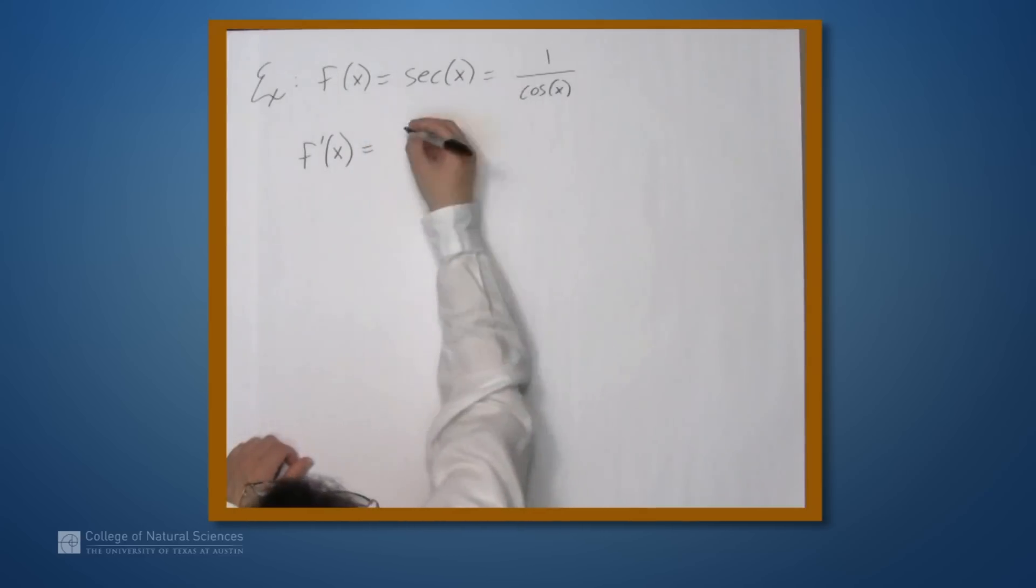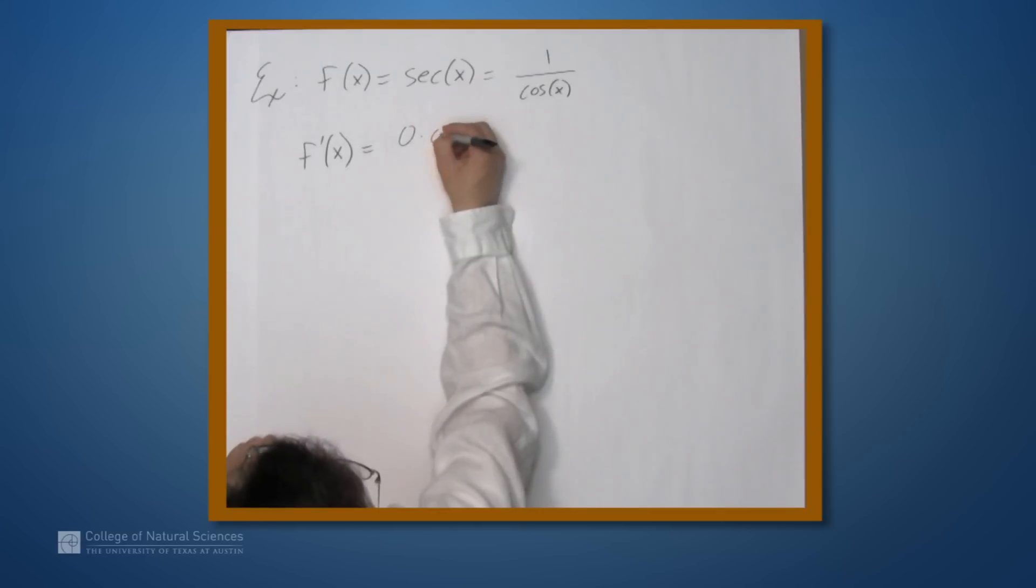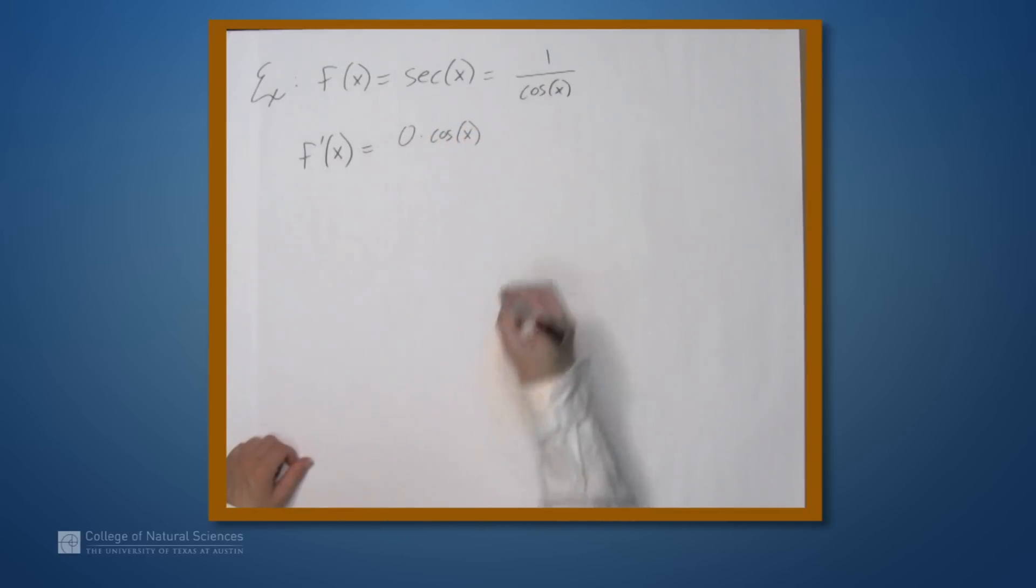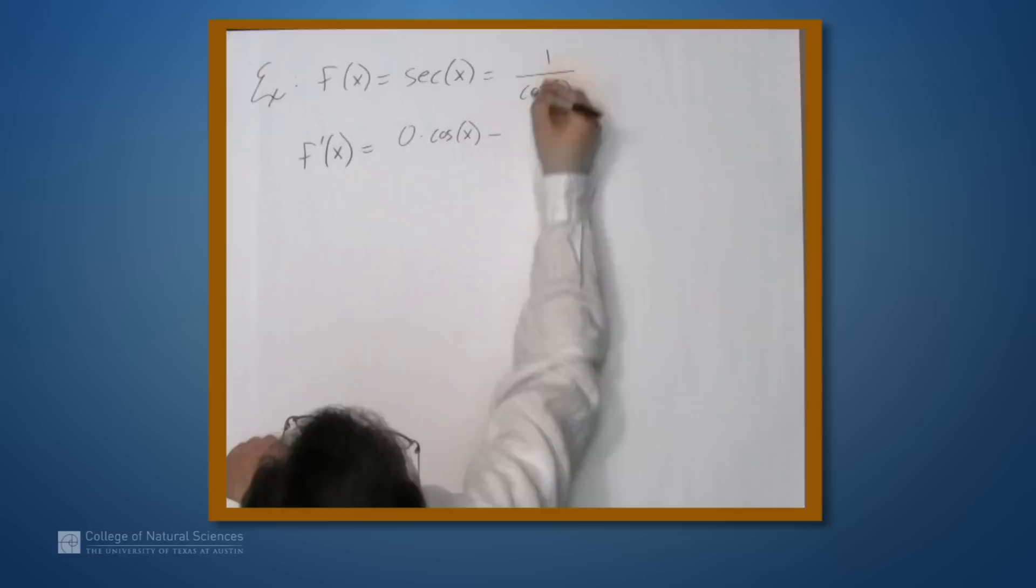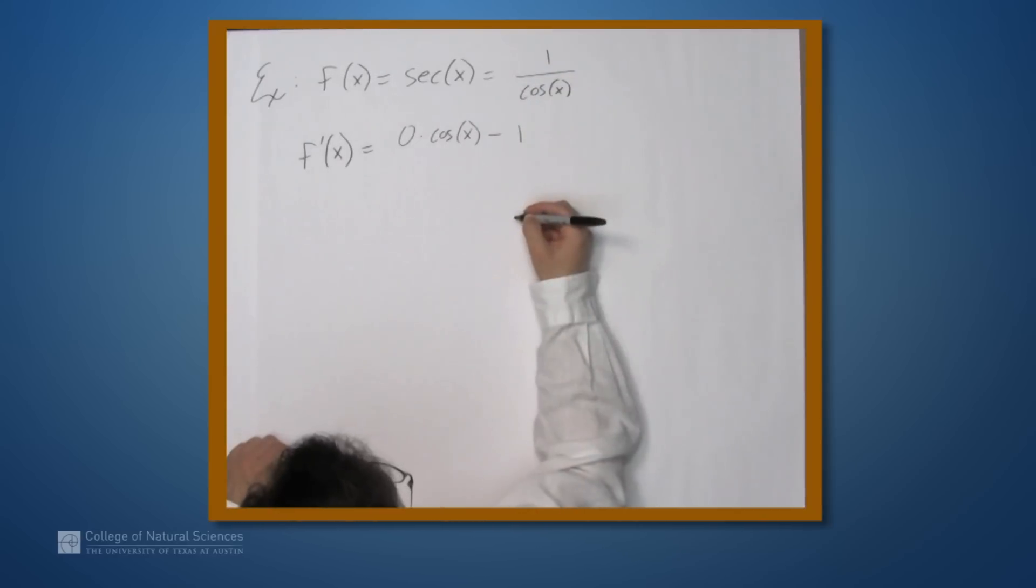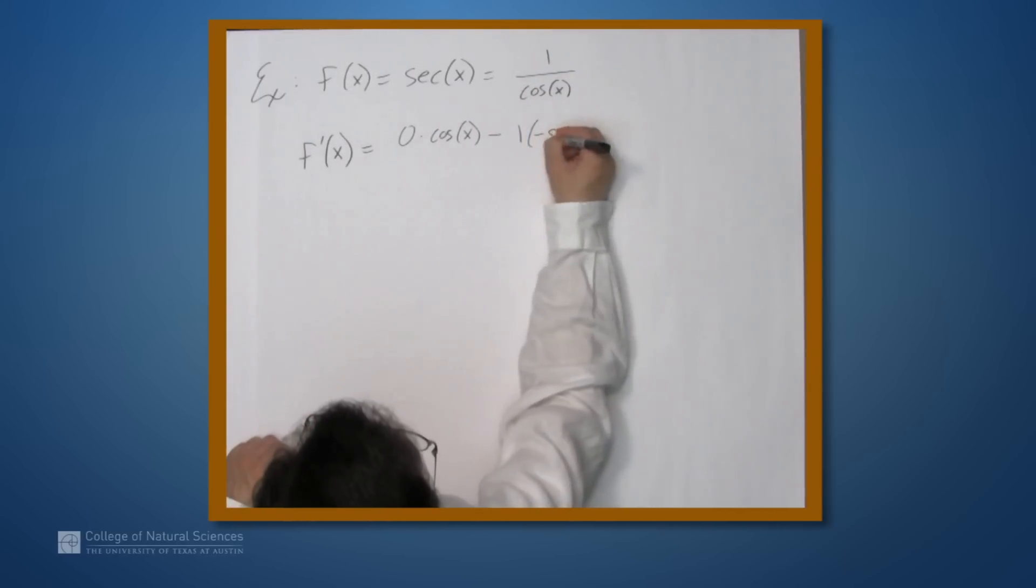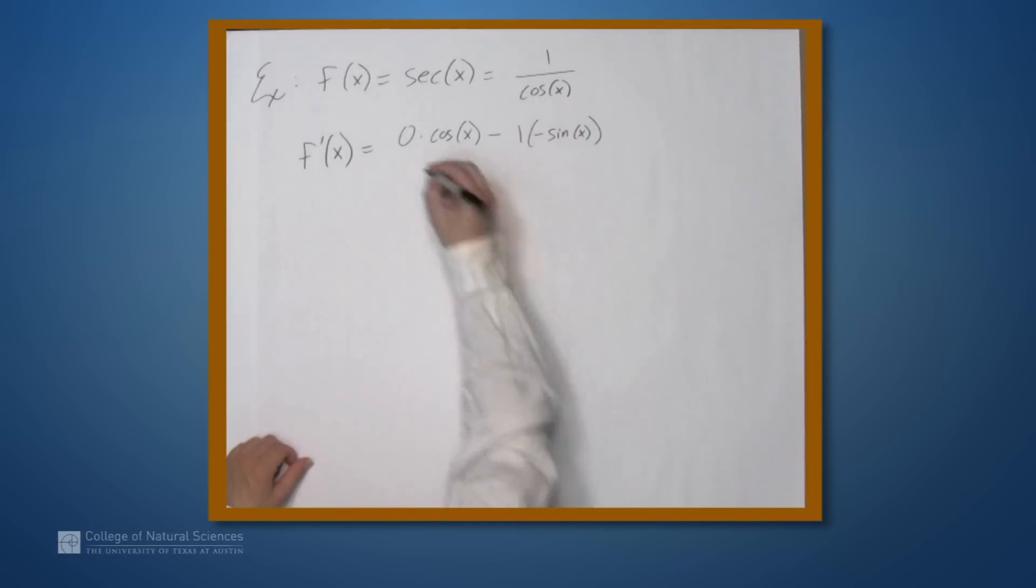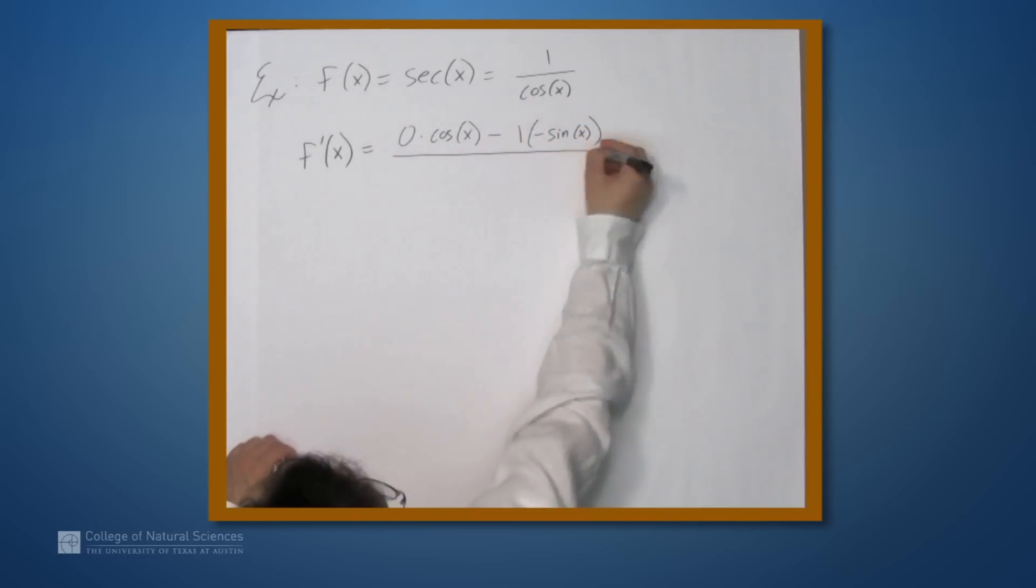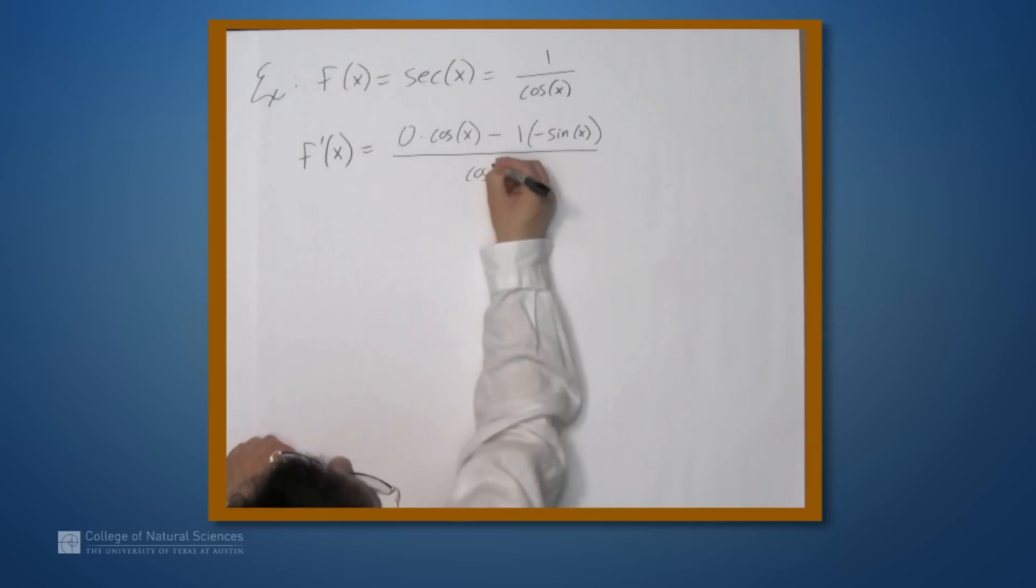So f prime, it's the derivative of the numerator, which in this case is 0, times the denominator, cosine x, minus the numerator, which is 1, times the derivative of the denominator, which is negative sine of x. And again, this entire thing over cosine squared of x.